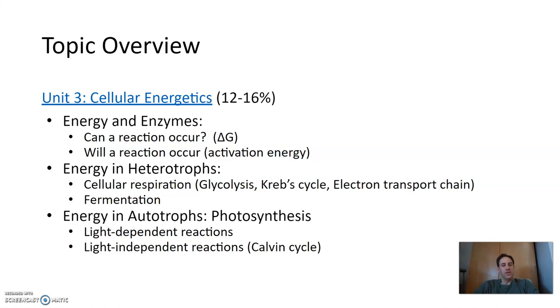We then looked at energy in heterotrophs, things that eat other things. We looked at cellular respiration, which consists of glycolysis, the Krebs cycle, and the electron transport chain, and then fermentation. And then energy in autotrophs, which is basically photosynthesis, including the light-dependent reactions and the light-independent reactions. These are obviously complex biochemical processes, so be sure to check Schoology for some overview screencasts that kind of recap those two topics pretty thoroughly.